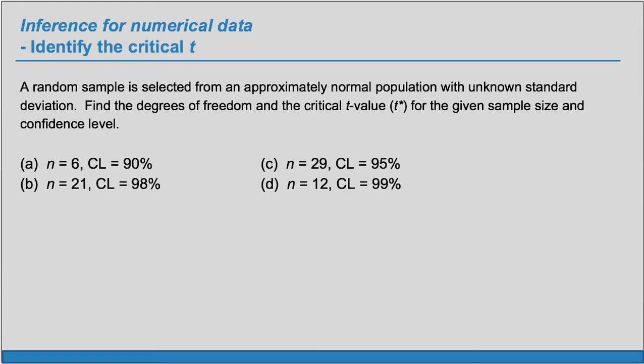So let's start with A. We have a sample size of 6 and a desired confidence level of 90%. For a one-sample t, the df is always n-1. So in this case, our degrees of freedom is going to be 6-1, which is 5.